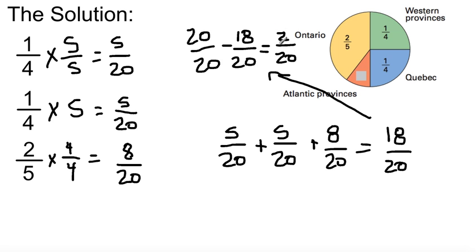Lowest terms: 2 over 20 is 1 over 10. So the number of Canadians who traveled within Canada and went to the Atlantic provinces is 1 over 10.